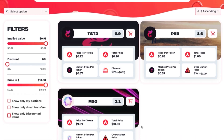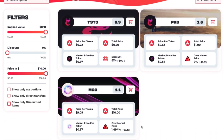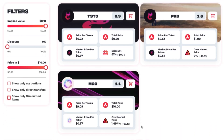Now you will see all the vesting portions available for purchase on the marketplace. To narrow your search, you can use the filter options in the left rail. Options are Implied Value, Discount Percent, and Price in Dollars. You can also select Show Only My Portions, Show Only Direct Transfers, and Show Only Discounted Items. In this case, let's select Show Only Discounted Items.